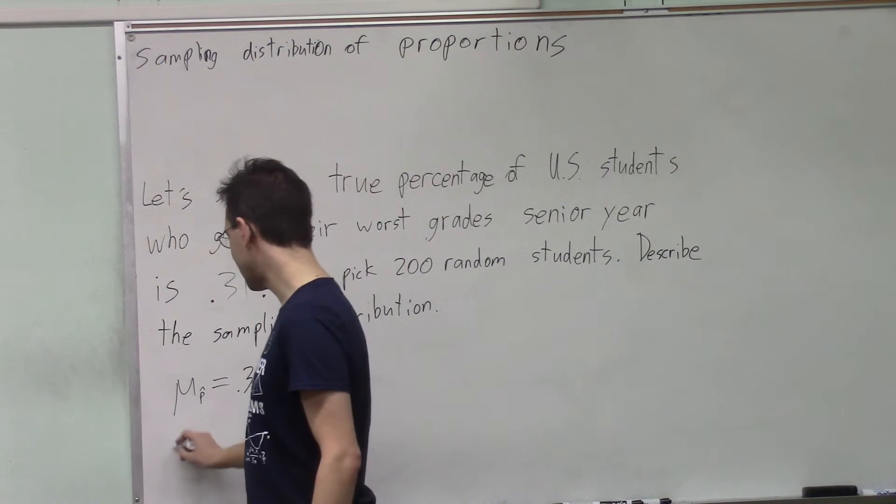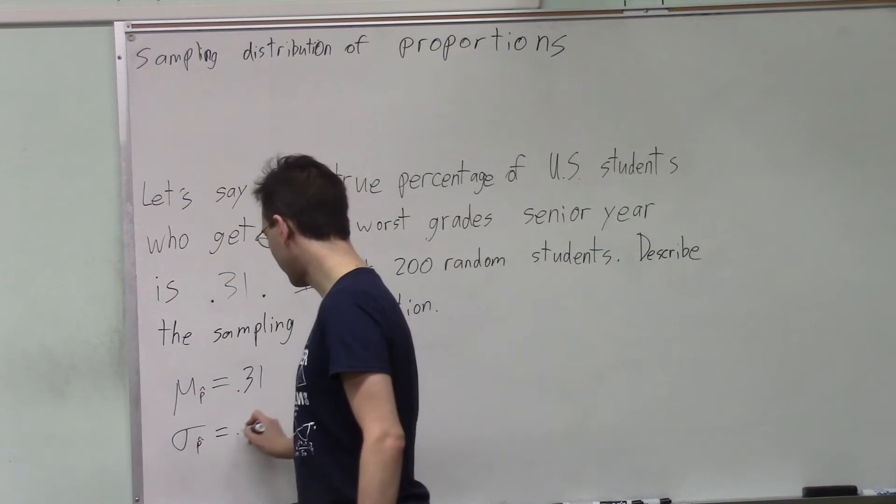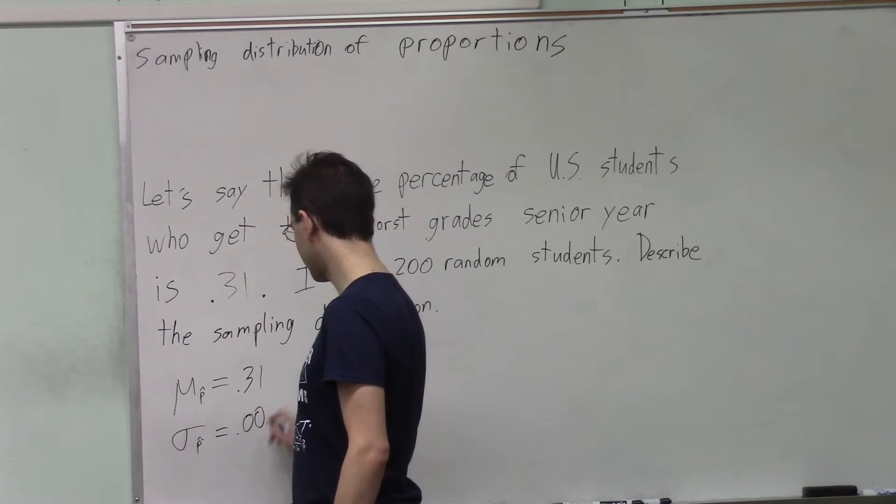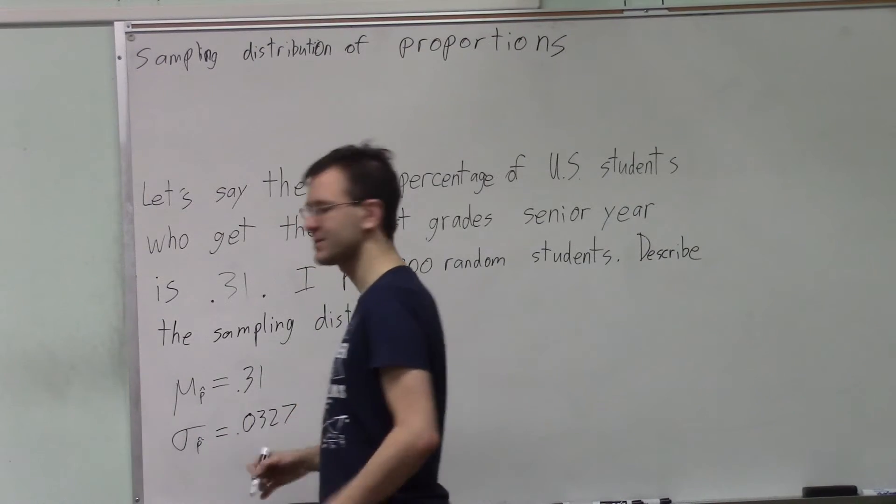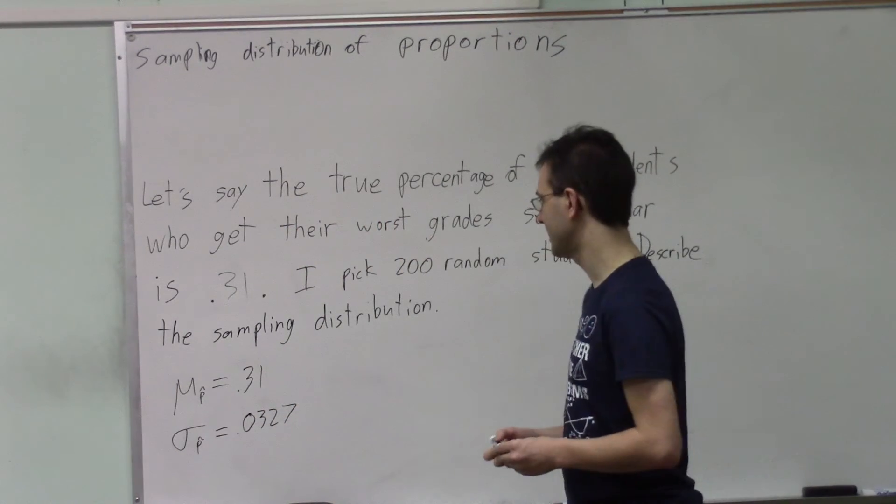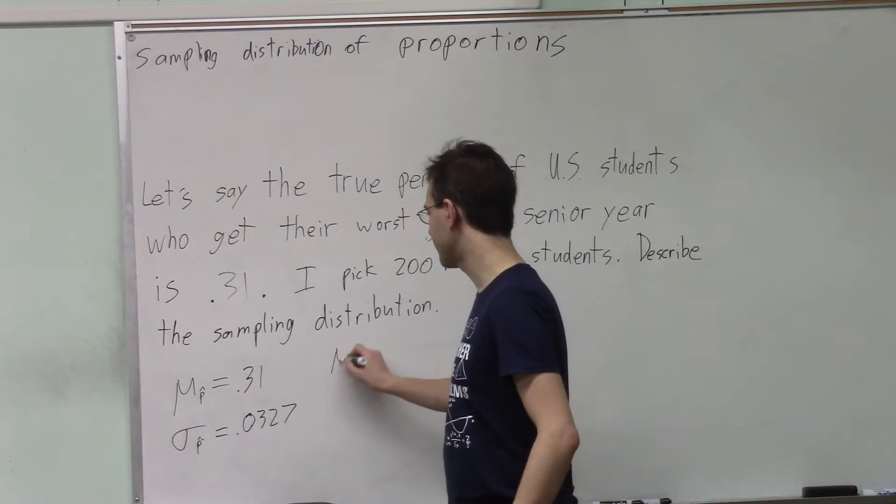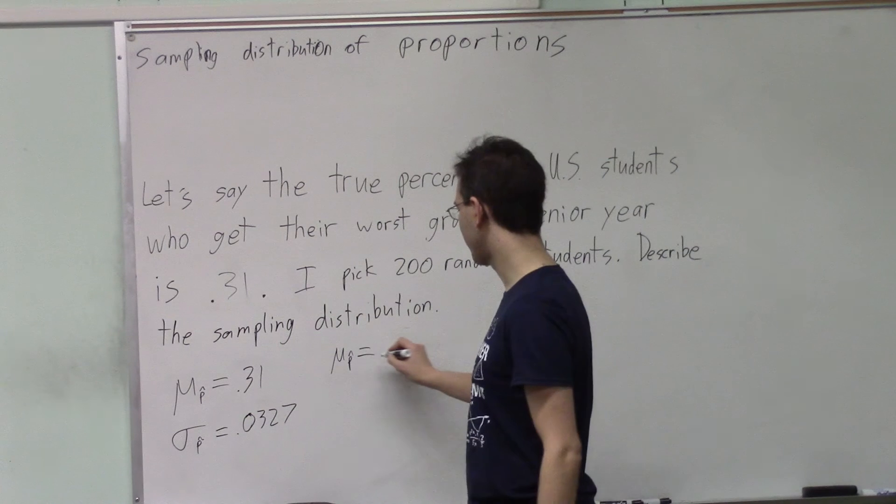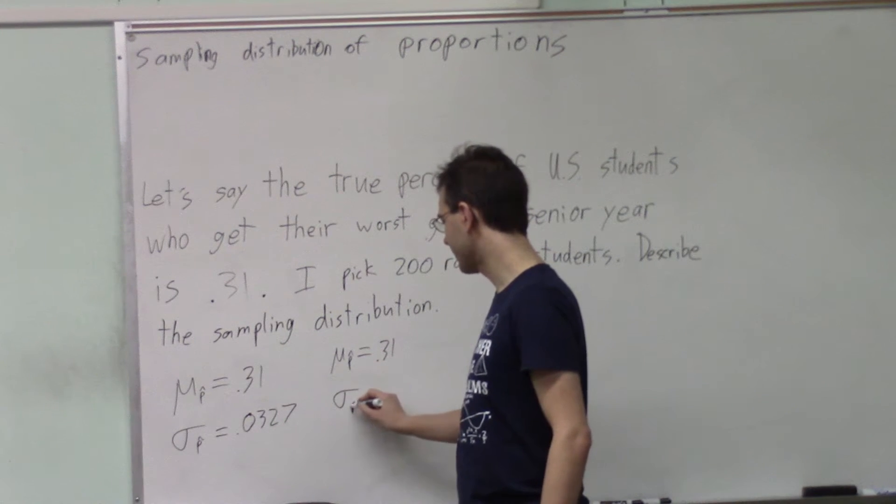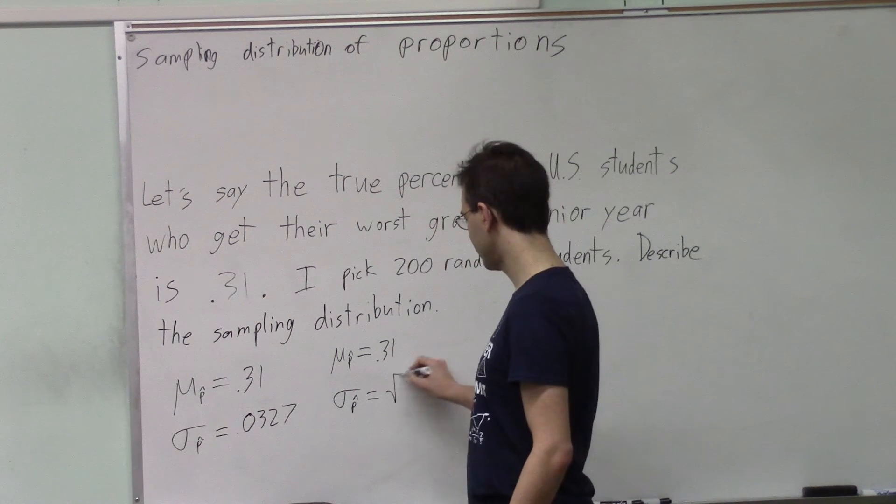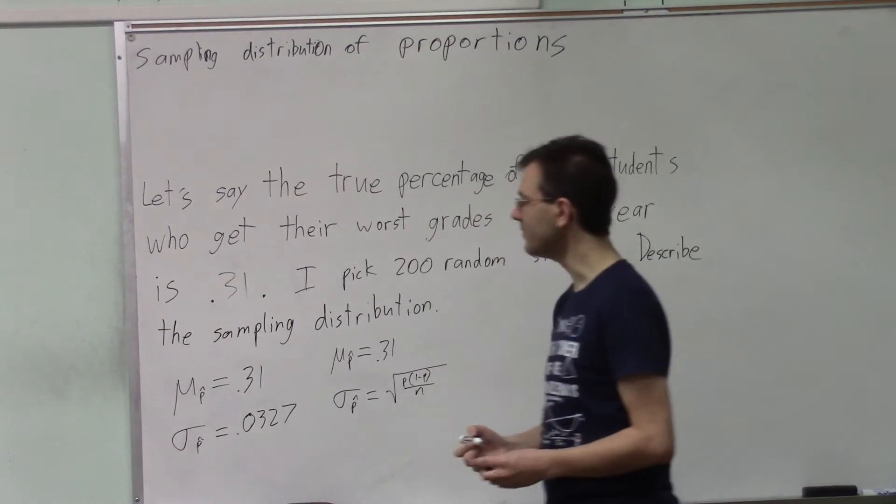And I will typically miss that by 0.0327, as we discovered in that last thing. Using the formulas from the formula sheet or from this chapter, the average guess of the proportion is the actual proportion. And your typical amount of missing the true proportion by will be formula p, 1-p over n.